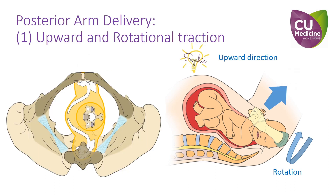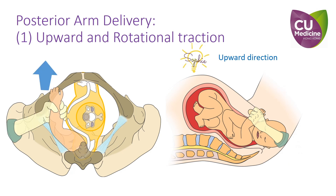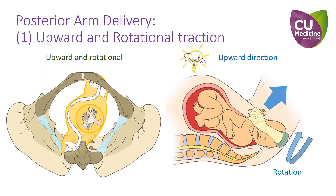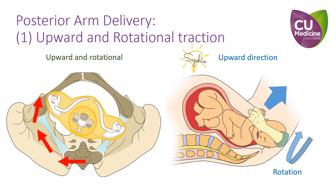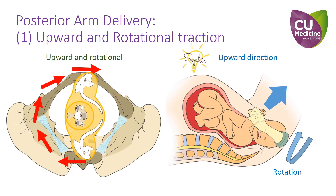The primary pathology is the obstruction of the shoulders by the bony antero-posterior diameter of the pelvis. The posterior-lateral sides of the pelvis are bound by soft tissues where there is potential space for the delivery of the shoulders. Rotation of the shoulders to the oblique diameter of the pelvis facilitates delivery, whereas downward traction can lead to further impaction of the shoulders into the bony pelvis.